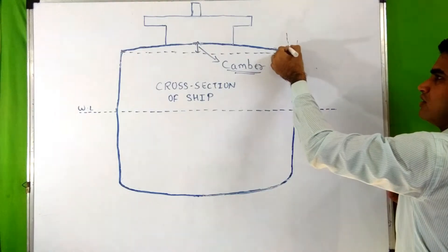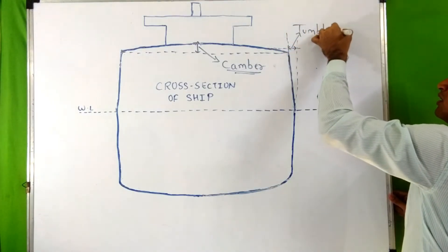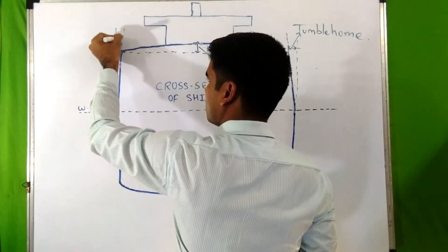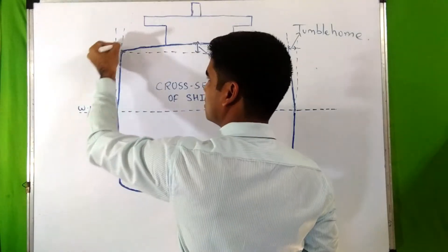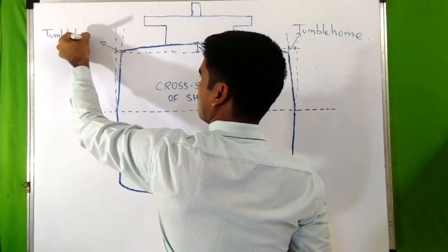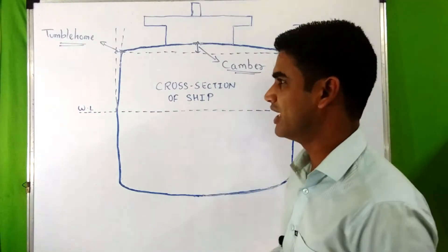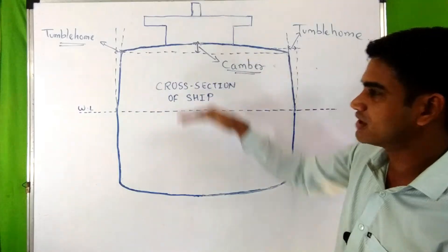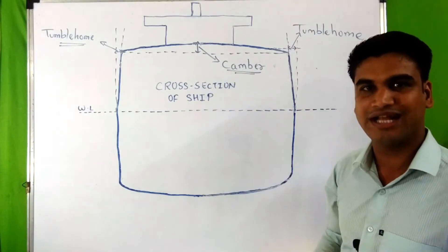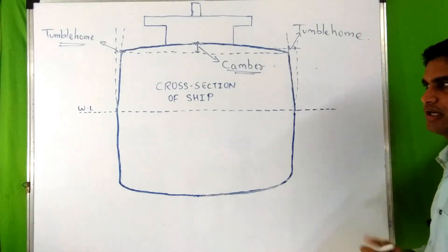This horizontal distance is known as tumble home — similarly on both sides. Tumble home actually gives more stability to the ship. This design helps stability because it lowers the center of mass, and therefore also lowers the center of gravity, which helps the ship structure to be more seaworthy and more stable.